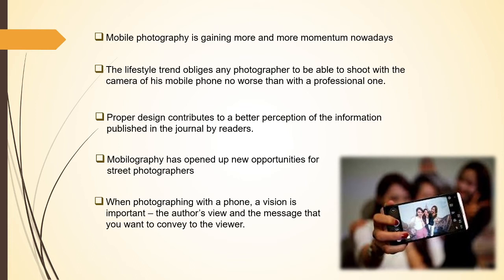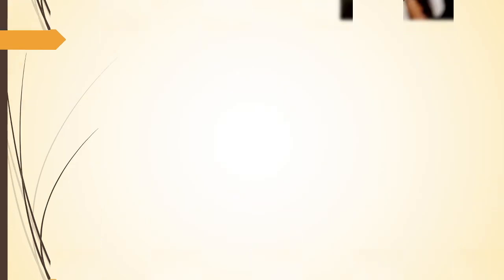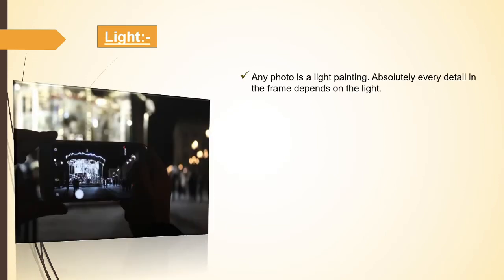Now we'll look at the important points that may affect your photography. The first one is light. Any photo is a light painting — absolutely every detail in the frame depends on the light. Bad light or the lack of it results in an unsuccessful photo; the lighter the better the quality. The direction, stiffness, power, and color are all parameters of light that will help make your photograph more beautiful. For example, the best time to take a portrait is a couple of hours after sunrise and a couple of hours before sunset.